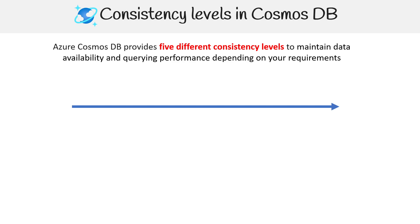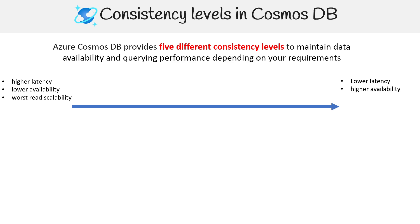We have this graph to help visualize the five levels. On the left-hand side, we have high latency, lower availability, and the worst read scalability. On the right-hand side, we have lower latency, higher availability, and better read scalability. So it's going to be based on what you need.